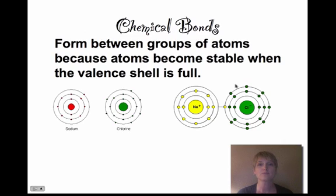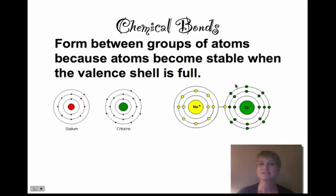Chemical bonds form between groups of atoms because atoms become stable when their valence shell is full. That very outer shell — if it is full of electrons, the atom is stable. But if a full shell usually holds eight electrons and an atom only has seven, it's not a happy atom, so it's looking to fill that outer shell.